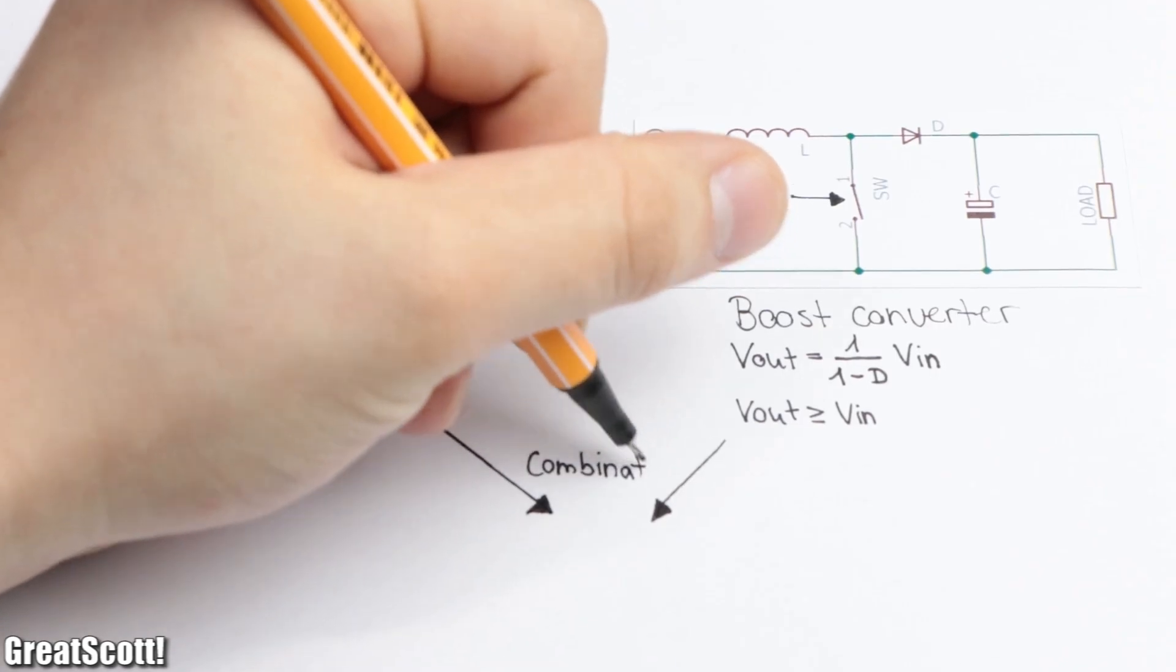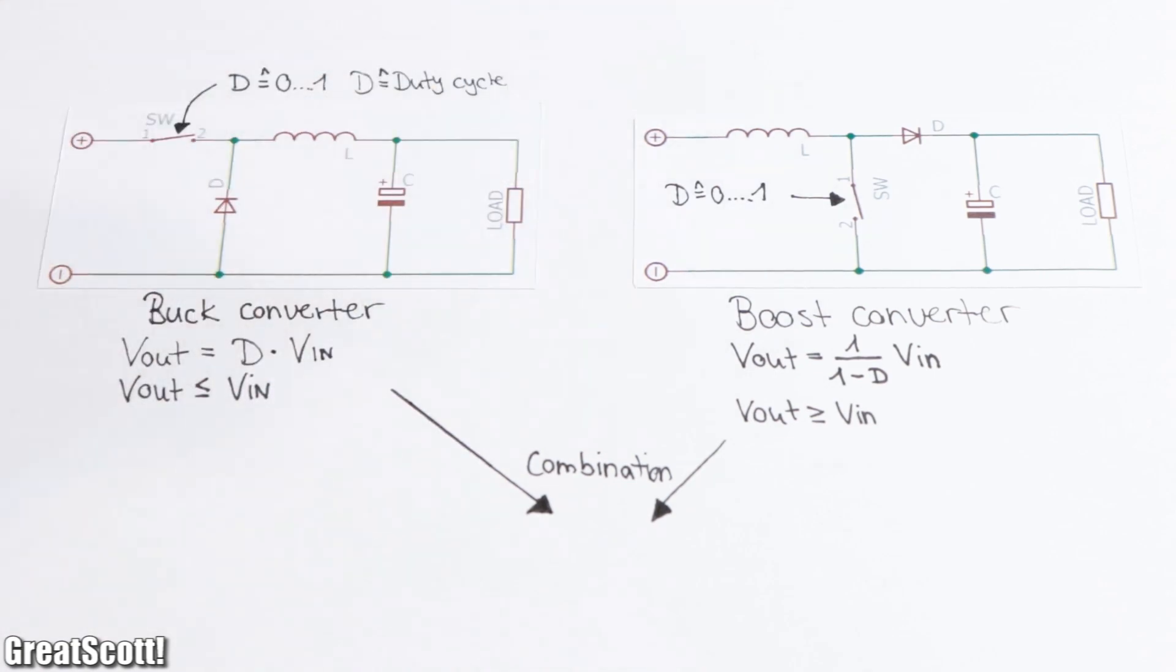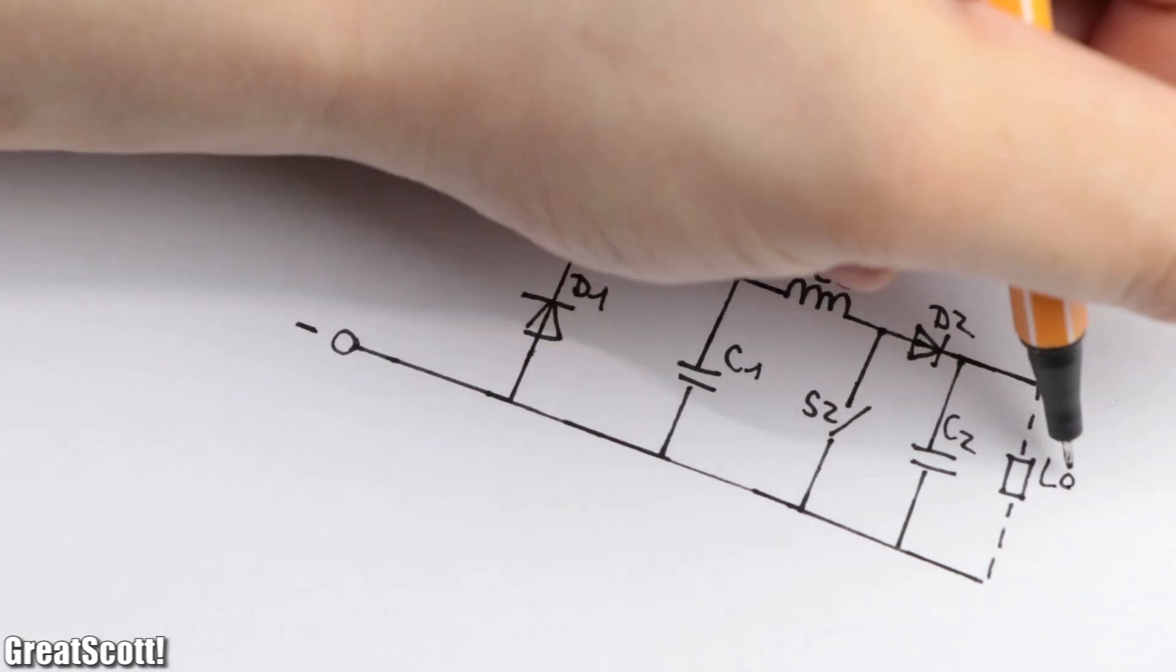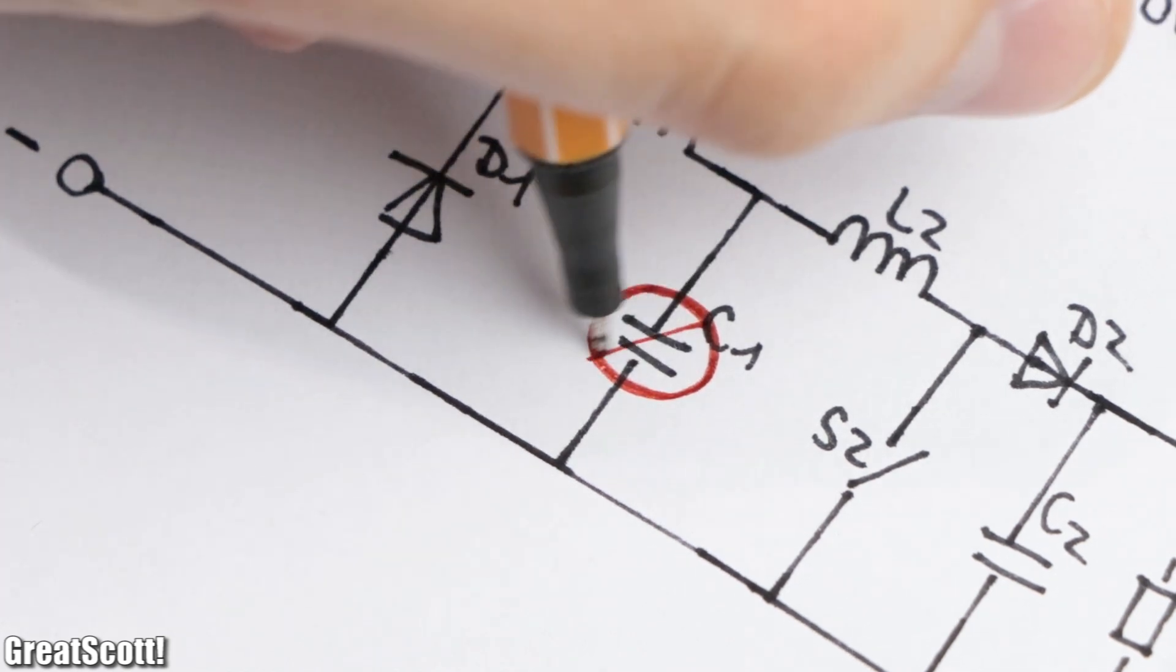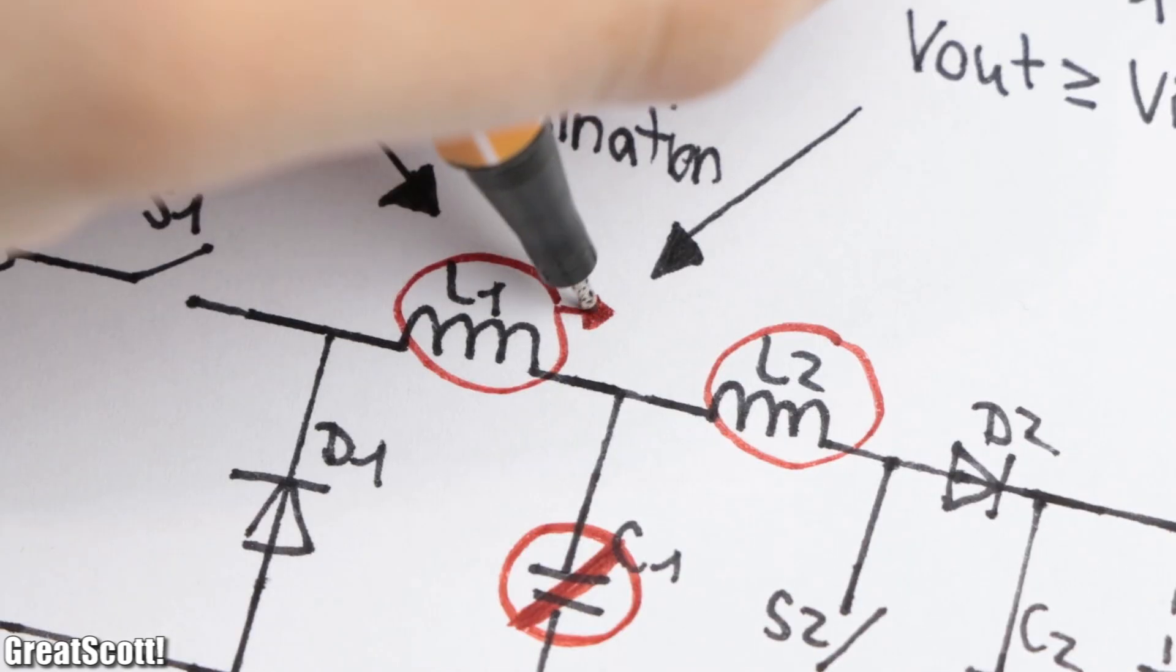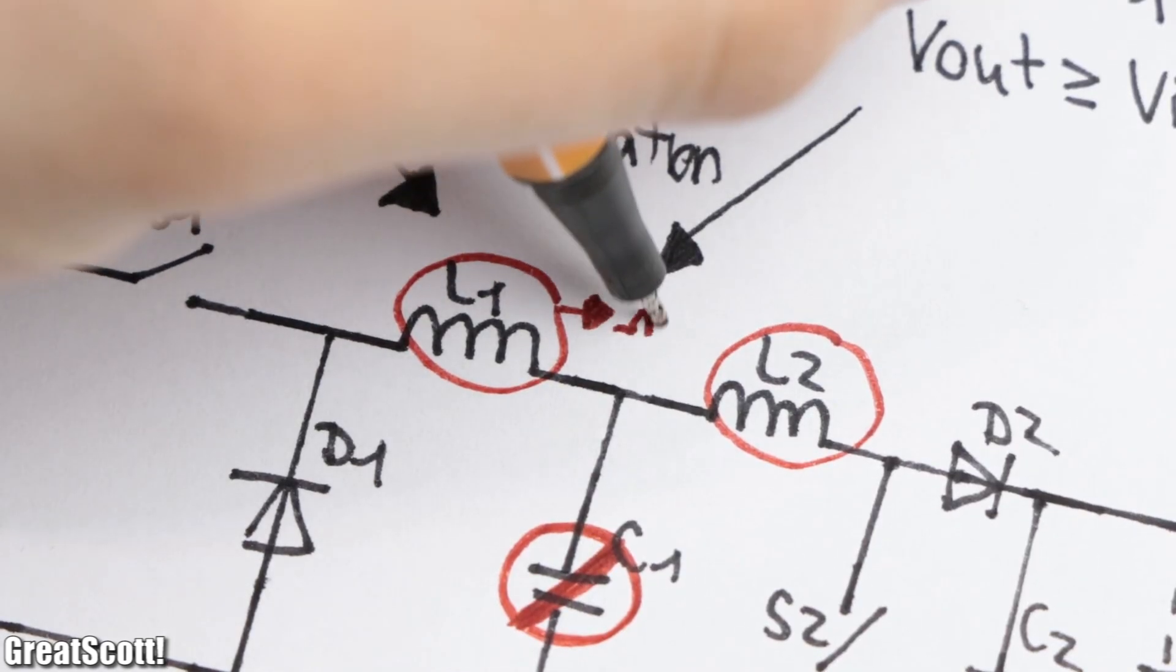Wouldn't it be convenient if we could just put the two circuits in series? Well, this method actually exists, and after removing the unnecessary capacitor in the middle and combining the two coils in series to a single one, we have successfully created a non-inverting buck-boost converter.